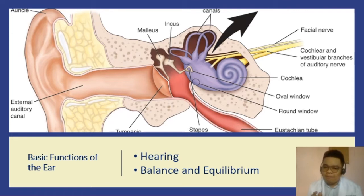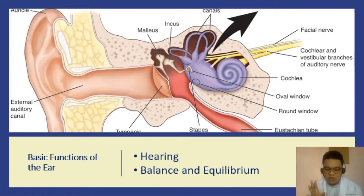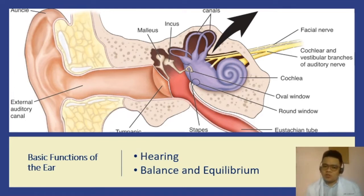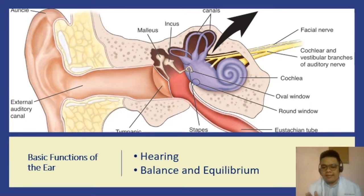Hearing involves not only your ability to hear, but also speech and the ability to communicate with others. A child with hearing difficulty will have problems talking and communicating because they are unable to recognize sounds. For balance and equilibrium, other than the cerebellum, your ears are also responsible — specifically the inner ear, which manages body movement, position, and coordination. If the cerebellum is intact but the patient still has balance problems, suspect an inner ear problem.